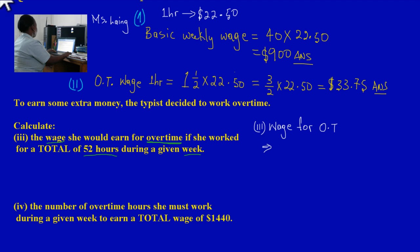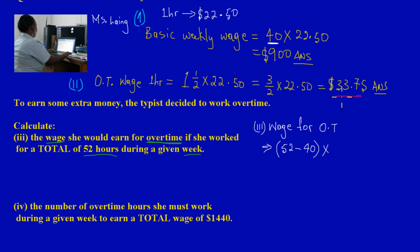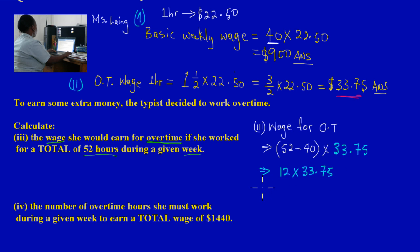Since she worked a total of 52 hours this week, I'm going to subtract the regular 40 hours and then multiply by the overtime rate we calculated in part 2, which is $33.75. So that gives us 52 minus 40, which leaves 12 hours, and 12 multiplied by $33.75 gives us a total of $405.